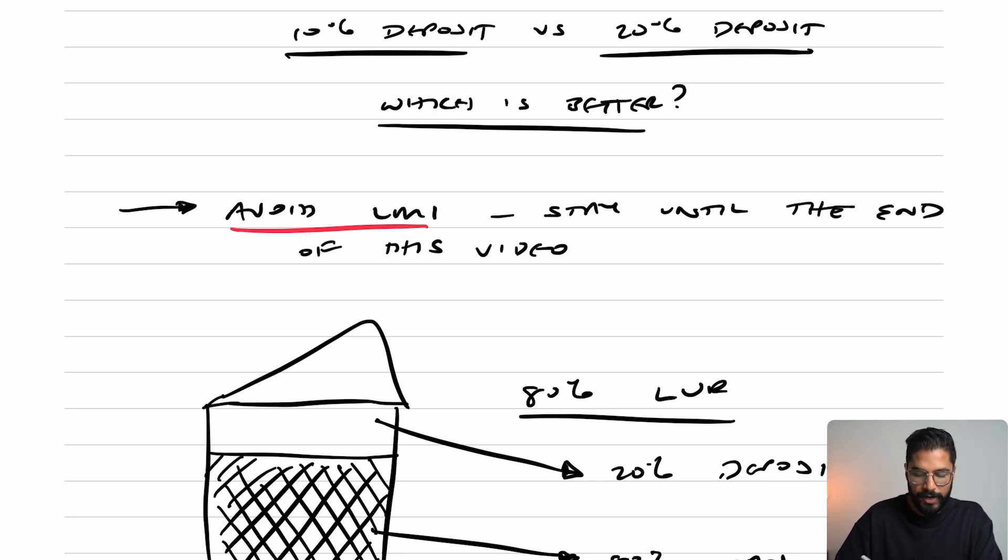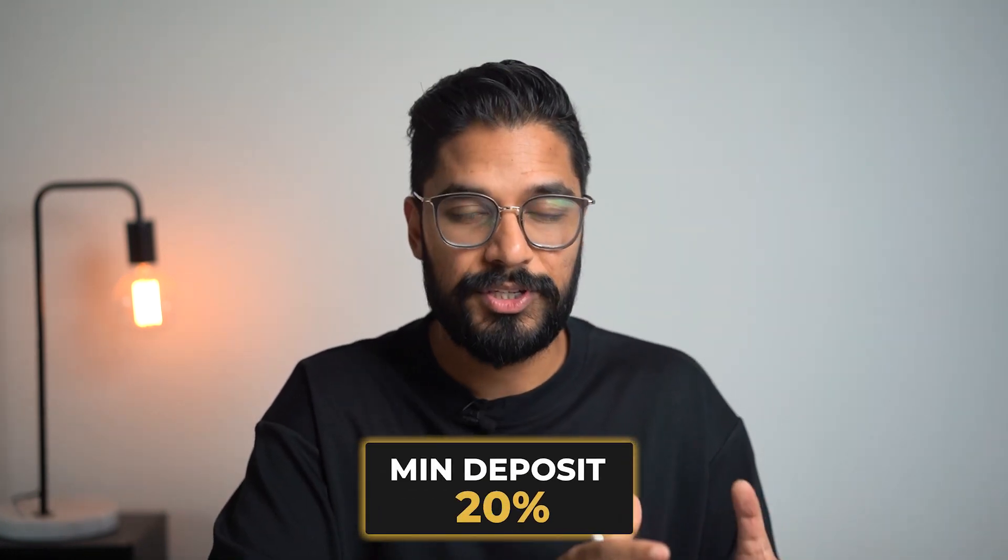So is a 10% deposit better or a 20%? As I mentioned, if we want to avoid LMI, stay till the end of this video. I'm going to share a couple of ways you can actually do that. Now you might be liable to pay LMI given the fact that you need a minimum 20% deposit to avoid LMI. So if you don't have that and you've got less than that, you can still buy property. You just have to pay a lender's mortgage insurance.